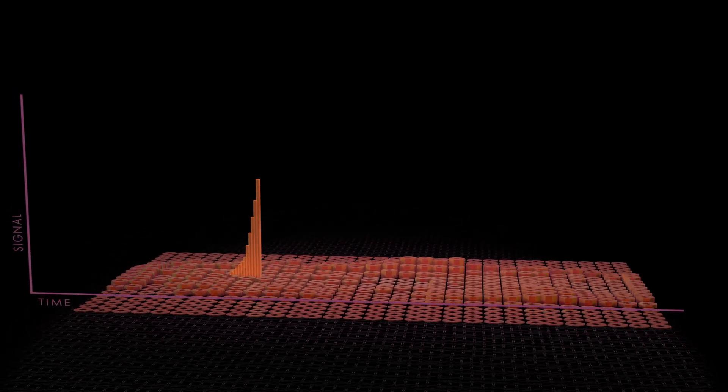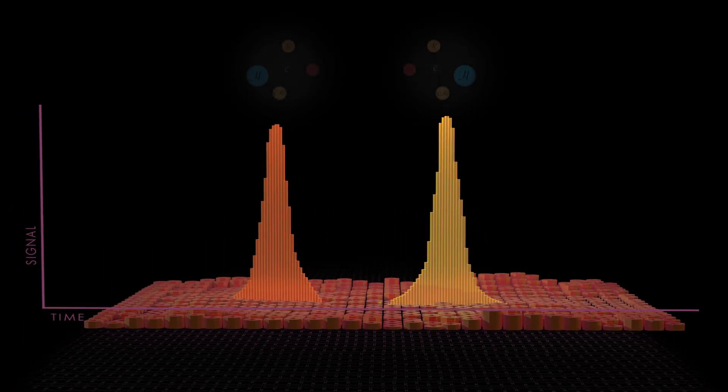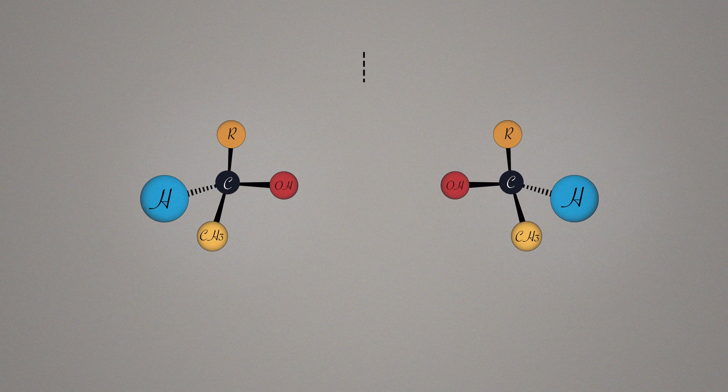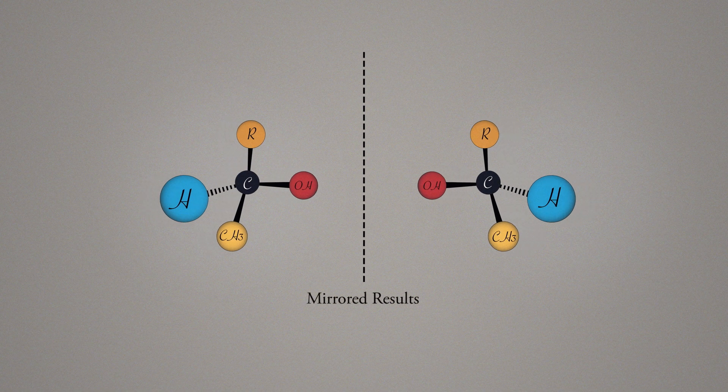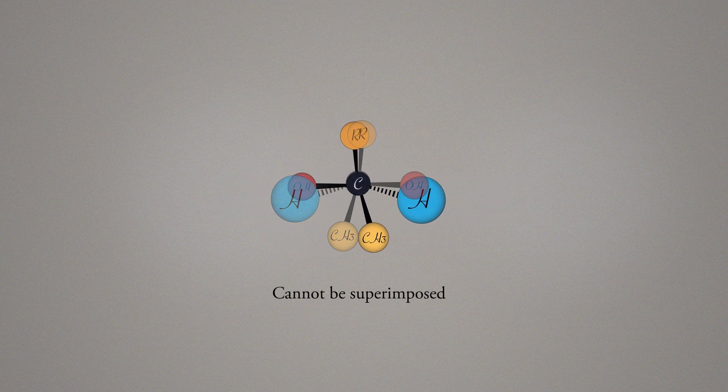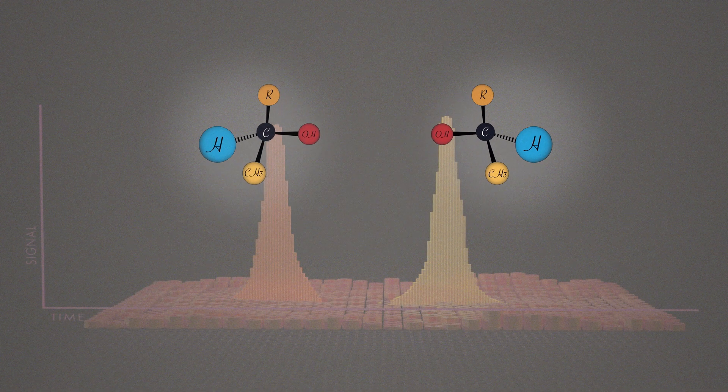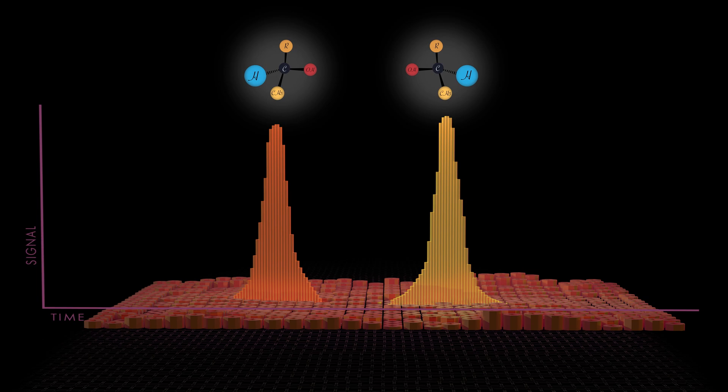This advanced separation of organic components includes isolating molecules with the same formula but different chiral arrangements or handedness. Having a preference for one handedness over another is a key biosignature for life on Earth.